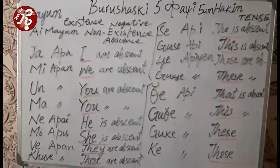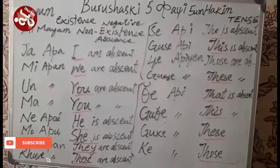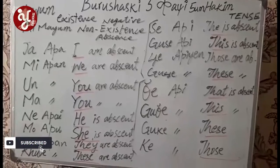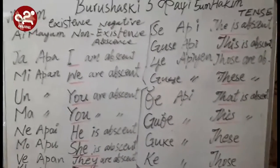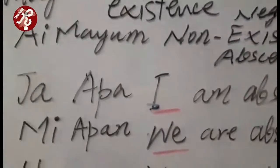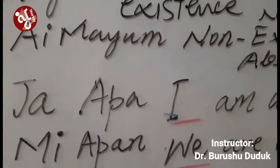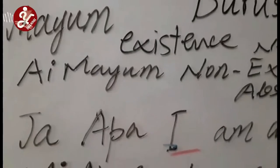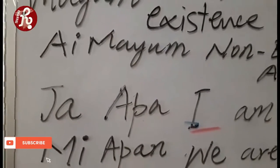So when a thing does not exist, it is absent, and the answer is in negative. How will you address the genders? We are going to describe that today. First of all, the pronouns are called Hayanim. In the Hayanim, this is Ja — Ja means 'me' or 'I'.